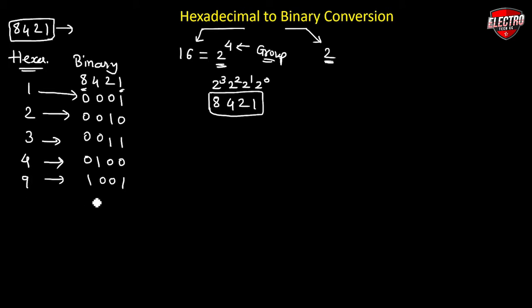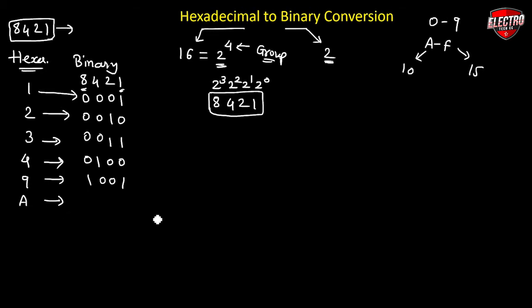As we discussed earlier, hexadecimal uses 16 different values — 0 to 9 and alphabets A to F — where A indicates 10 and F indicates 15. To convert A (which is 10) into binary, we use 8 plus 2, giving the equivalent binary number 1010.